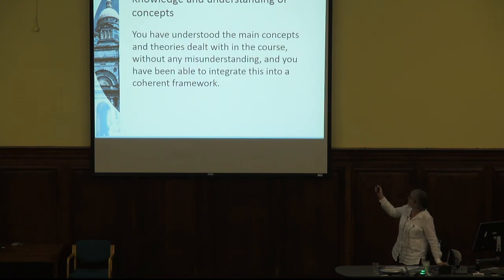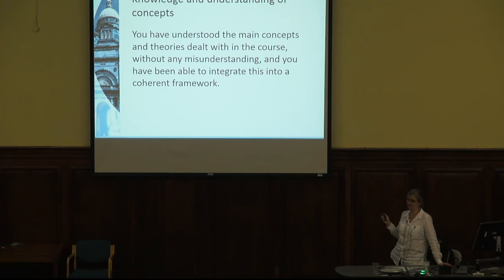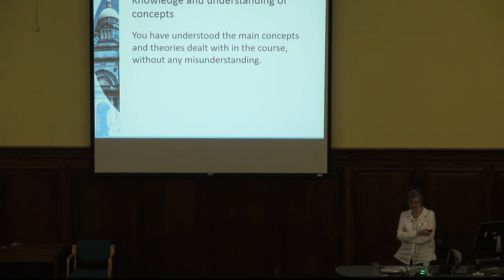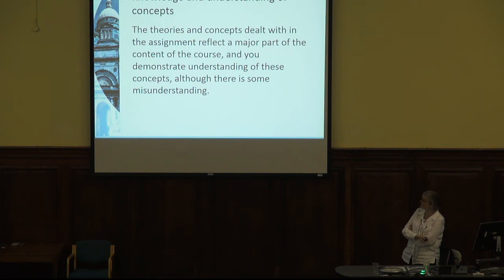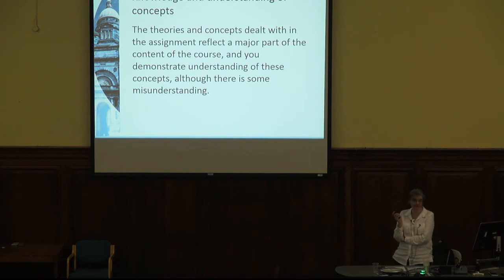The next five slides cover the assessment criteria. For knowledge and understanding of concepts, to get an A you need to have understood the main concepts and theories without any misunderstanding and integrated them into a coherent framework. For a B, you've understood the main concepts without misunderstanding and the theories reflect a major part of the course, though you may demonstrate some misunderstanding in places. For a C and D, there are increasing omissions or misunderstandings. It's not at all unusual to get a D on this first assignment — it's the first time writing at master's level, possibly in a British university.